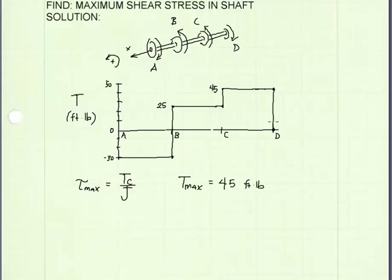From our diagram, we see that the maximum internal torque occurs from C to D at a value of 45 foot-pounds. We will use that value in our equation for maximum shear stress.